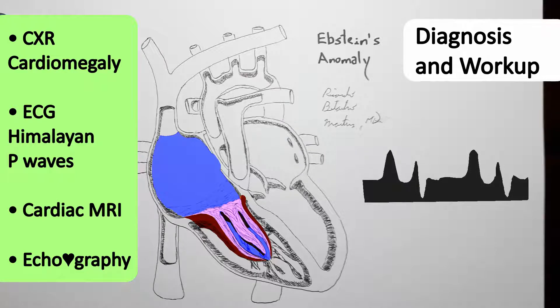Himalayan is just because they are absolutely huge — most likely the largest P-waves you will ever see, which makes sense because we are talking about the largest right atrium you will ever see, most likely.